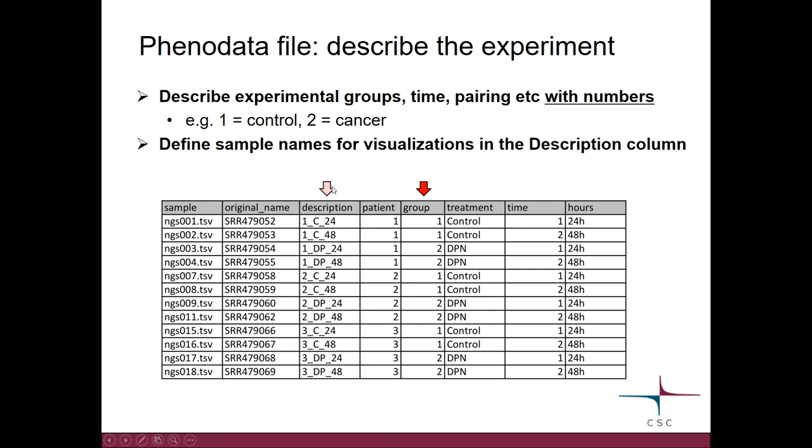Then there is another column I wanted you to draw attention to, and this is the description column. So when you make images, Chipster will take the sample names from this column. By default, they are filled in with the file names, but if you are making publication pictures, you probably don't want file names in your images, but rather something neater and more compact.